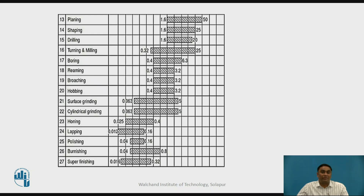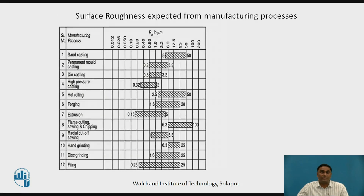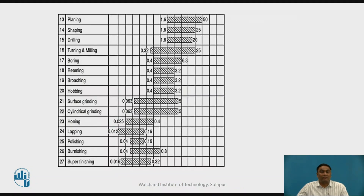The table continues with processes such as planing, shaping, drilling, turning, boring, honing, surface grinding, polishing, burnishing — starting with sand casting and ending with super finishing process. All roughness values are given, so the RA value that can be achieved depends on the functionality of the surface and which RA value is required.